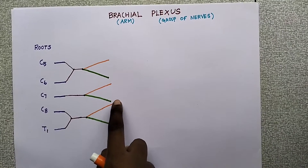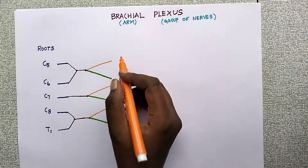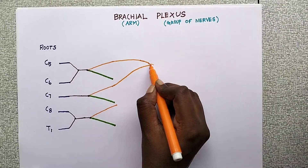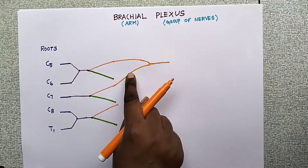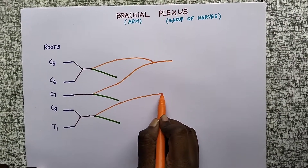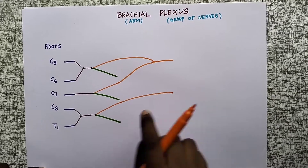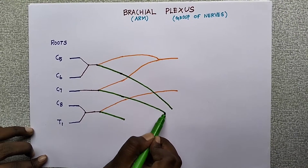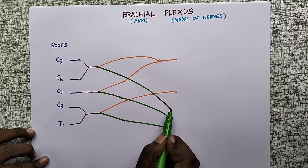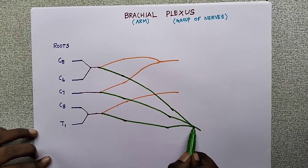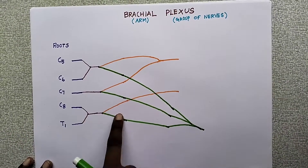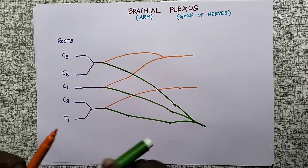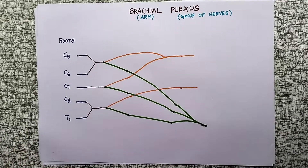Now we will see how the cords are formed. The anterior divisions of the upper trunk and middle trunk form one cord. The anterior division of the lower trunk forms another cord. All three posterior divisions together form the posterior cord.